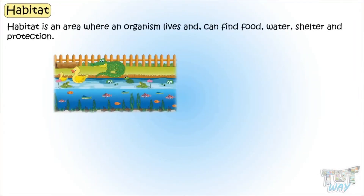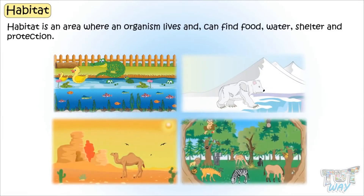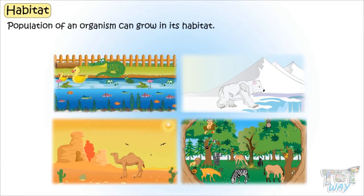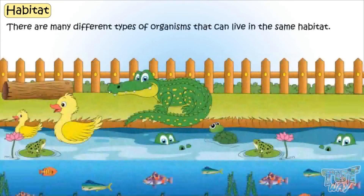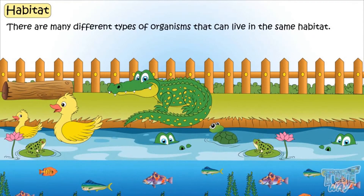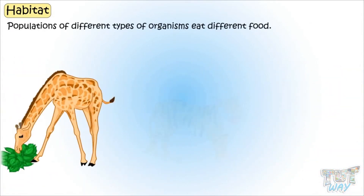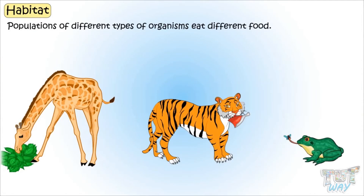Kids, we already know habitat is an area where any organism lives, and it can find its food, water, shelter, and protection. The population of that organism can grow in its habitat. There are many different types of organisms that can live in the same habitat, and populations of different types of organisms eat different food. And there is a flow of energy in a habitat. Let's see how!